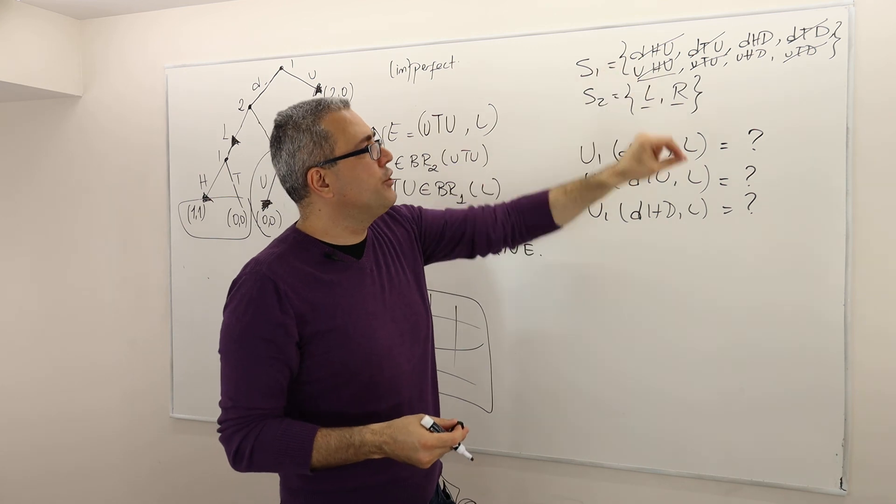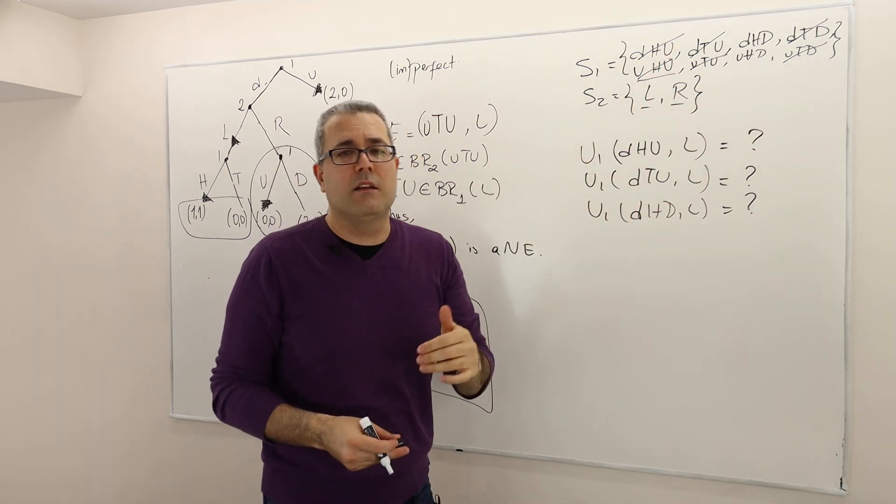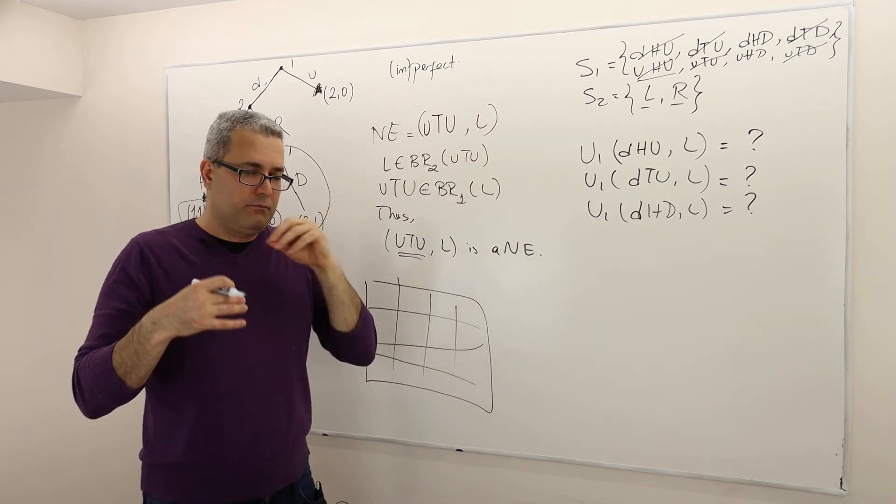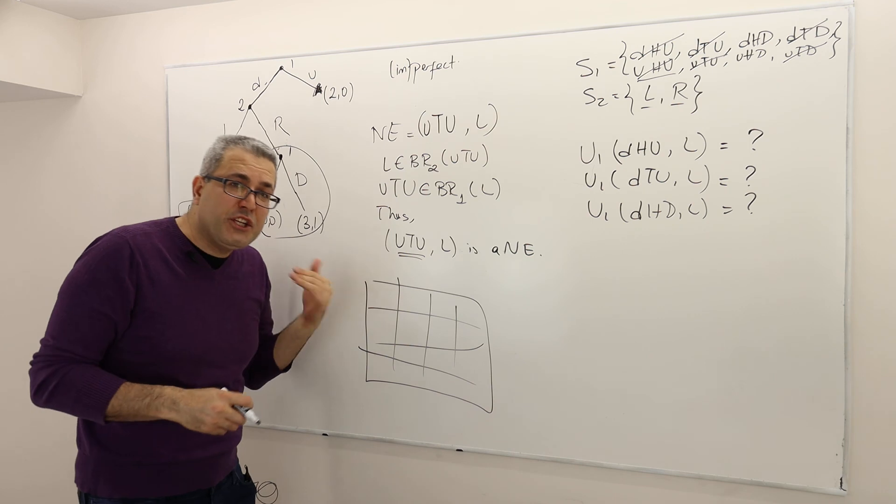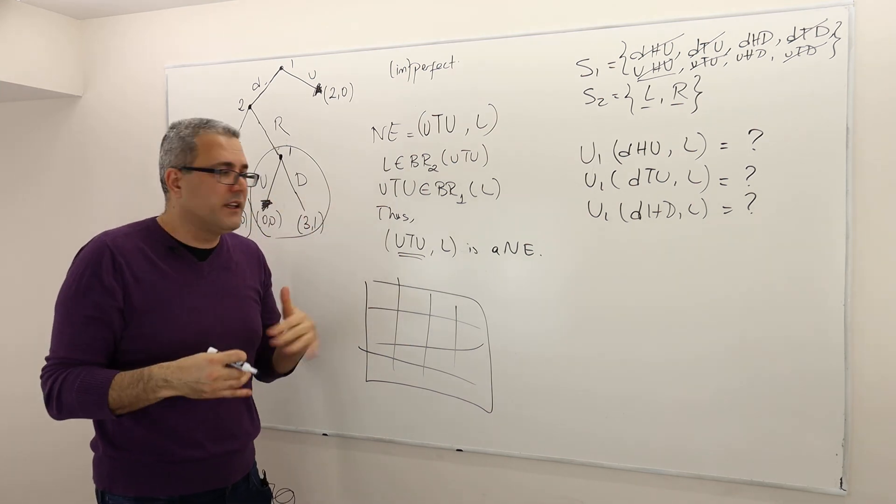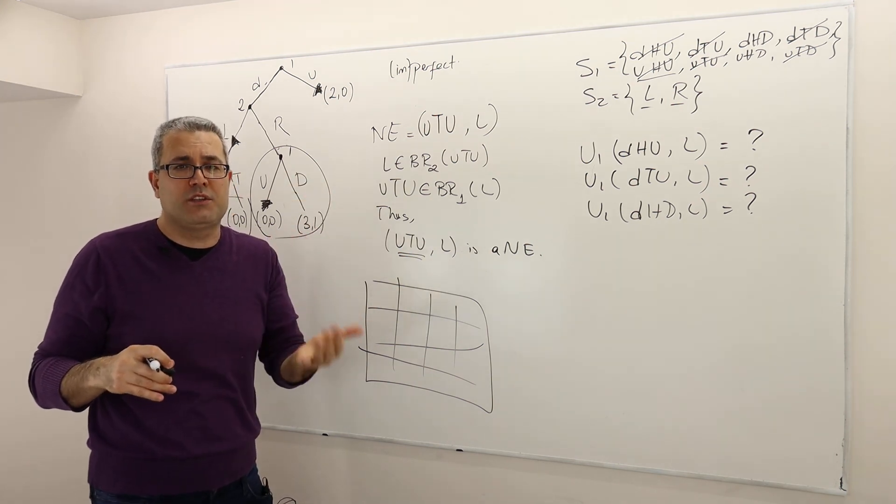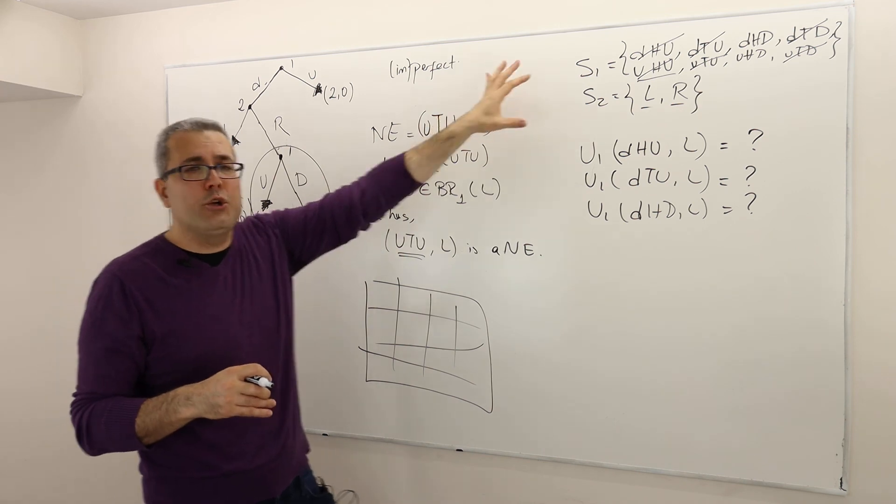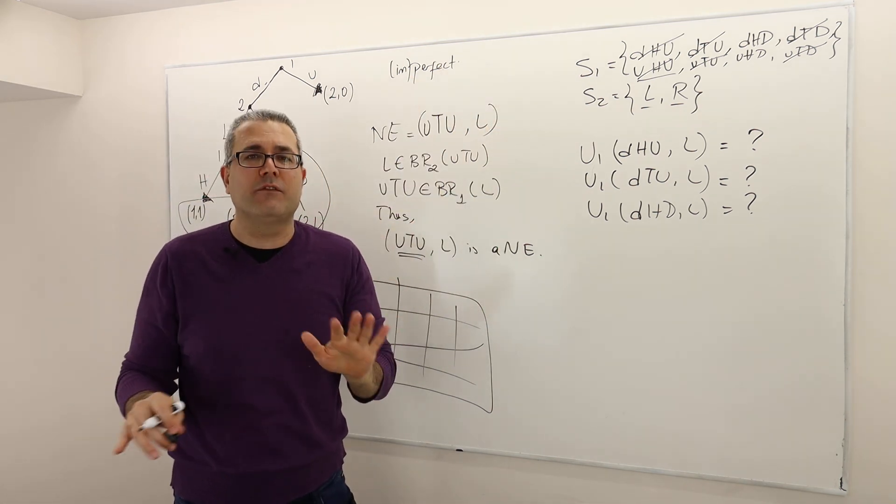Player one, are you going to choose DHU or something else? And player two, are you going to choose L? Once they choose those strategies, the idea of Nash equilibrium assumes that the players will have no opportunity to change or revise those strategies. They choose once and for all. That's it. That's the end of the game.